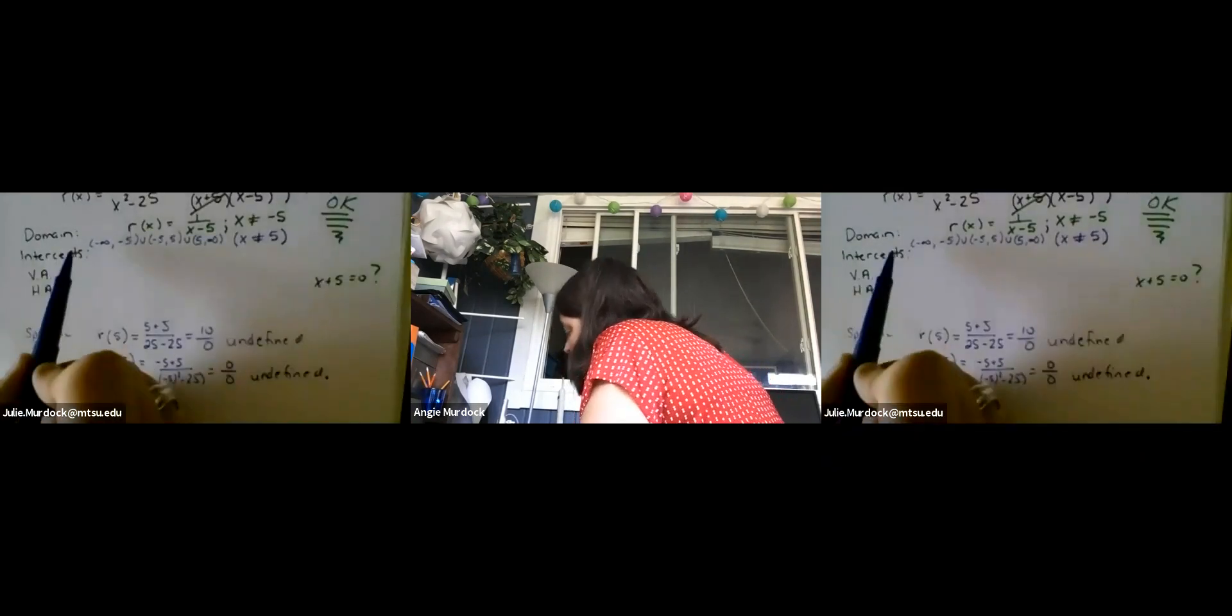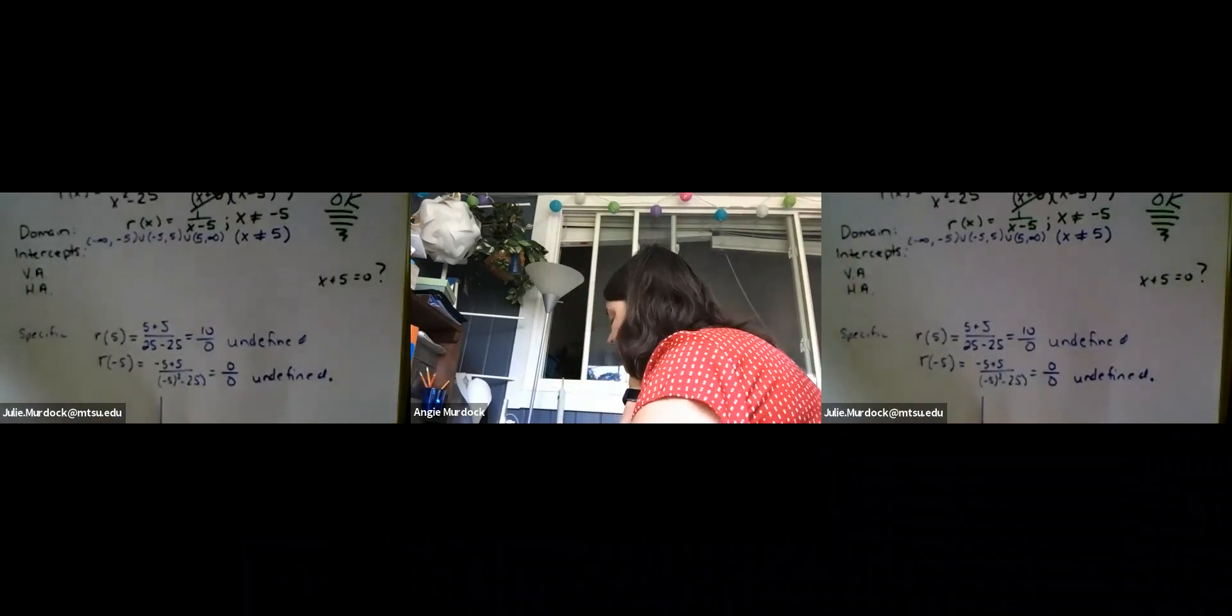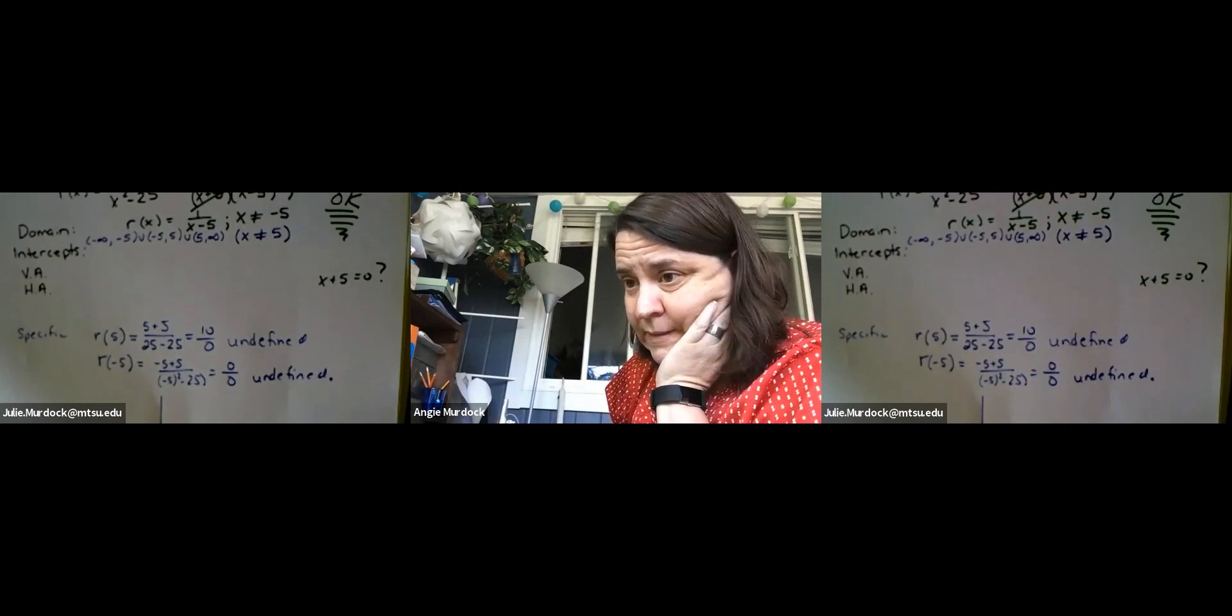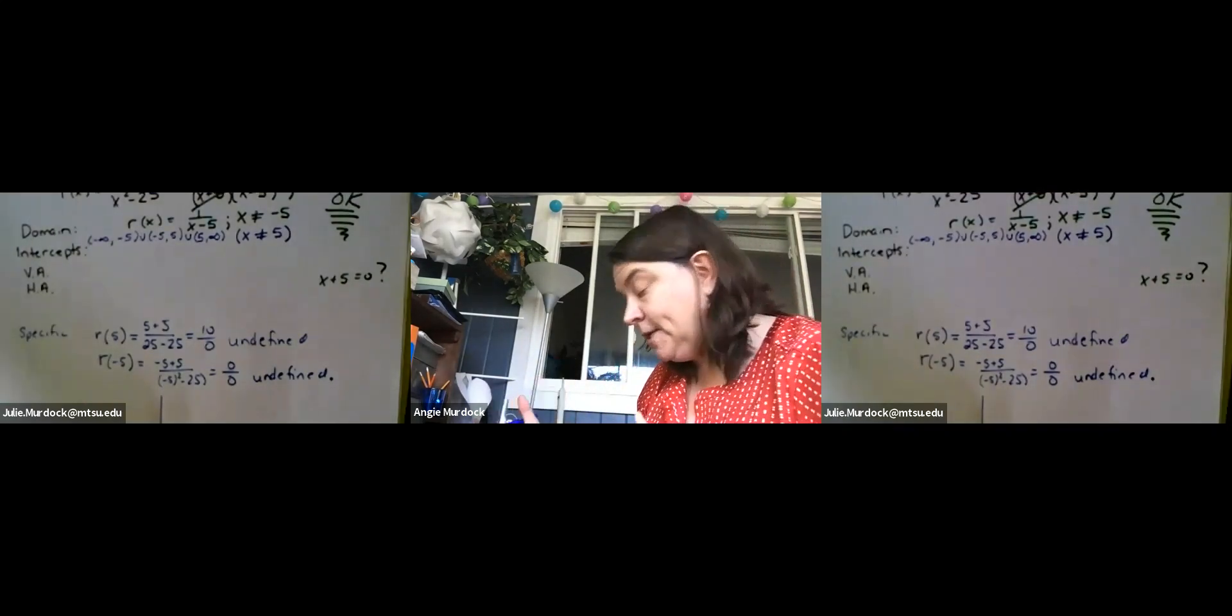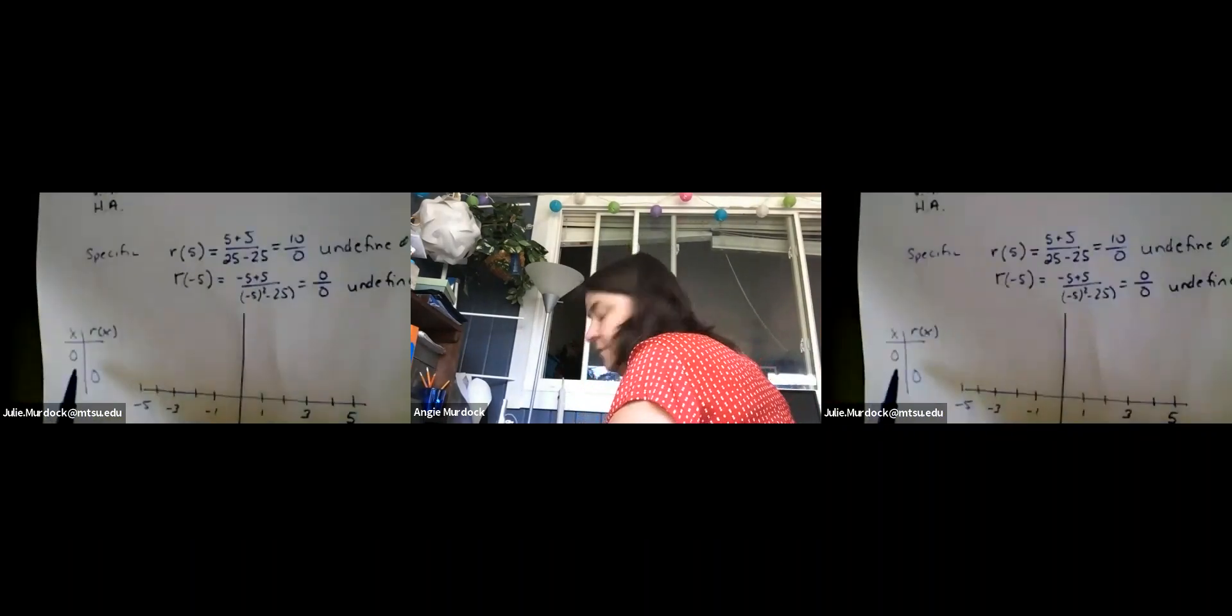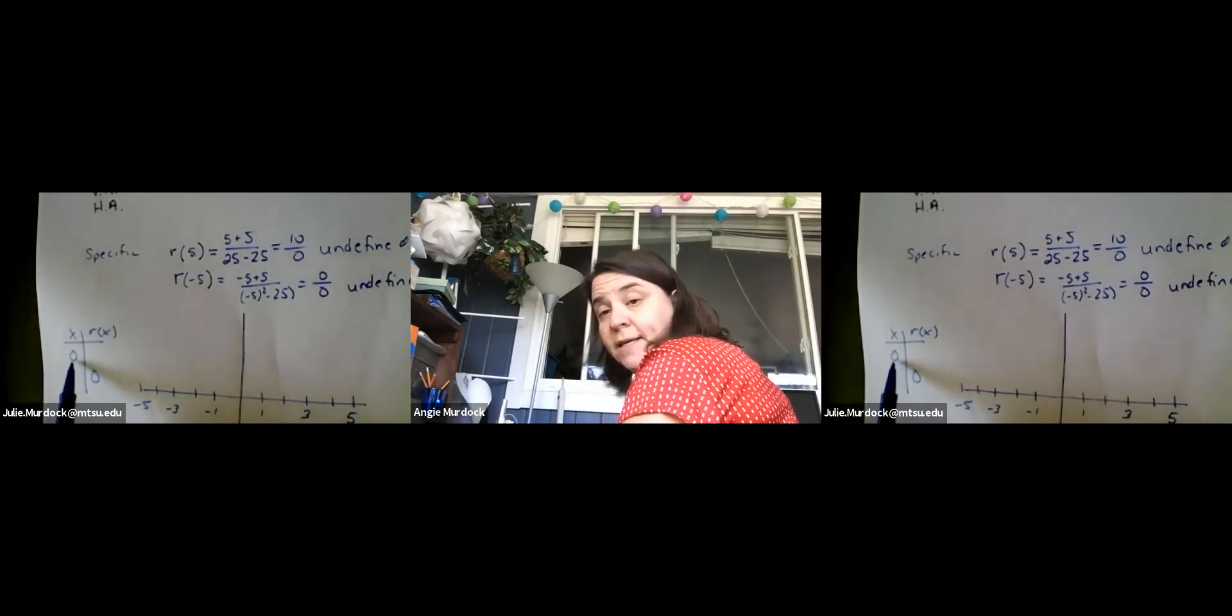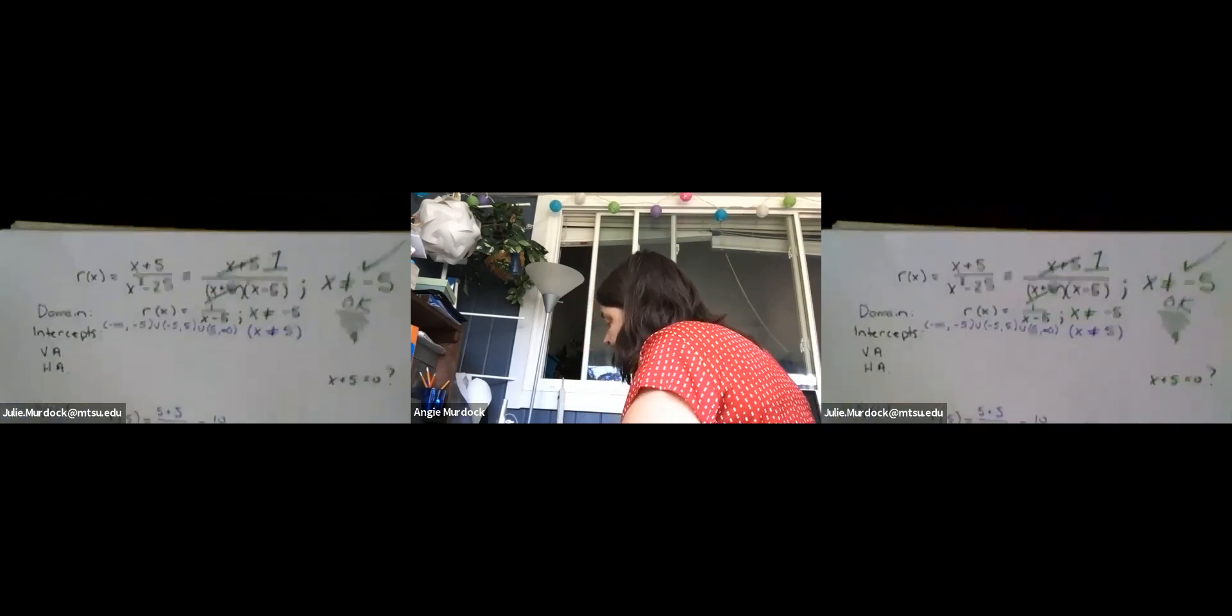Okay, so our intercepts will be the intersections with either of the axes. If our curve crosses either axis that's called an intercept. Now I just kind of think to myself tabularly, can I plug in zero for R? What would R of zero be?